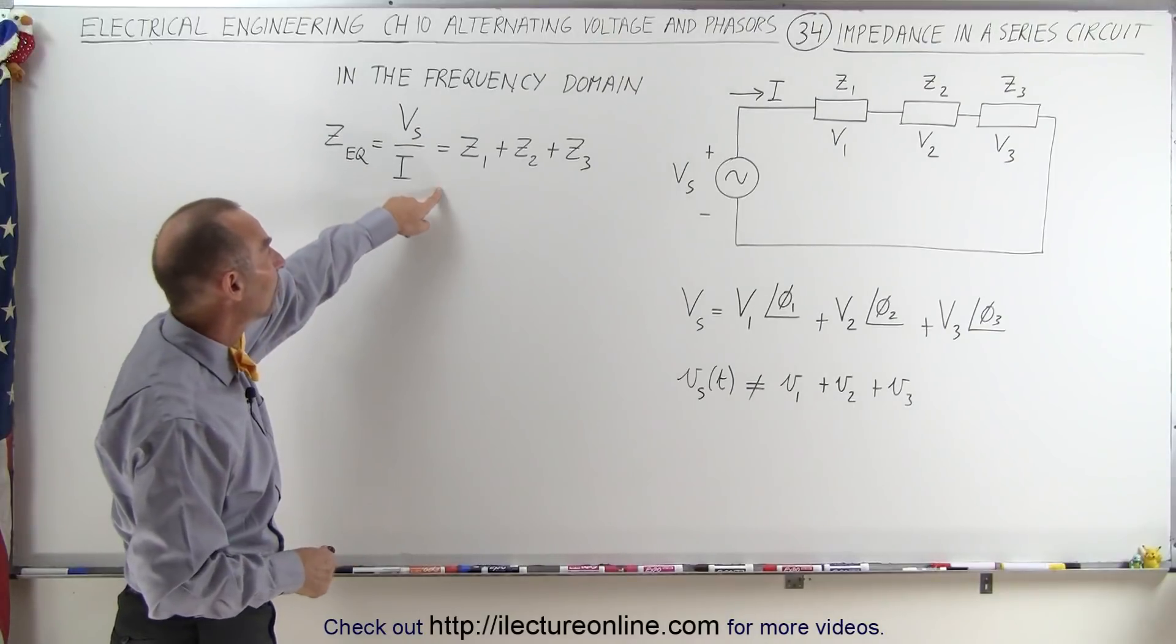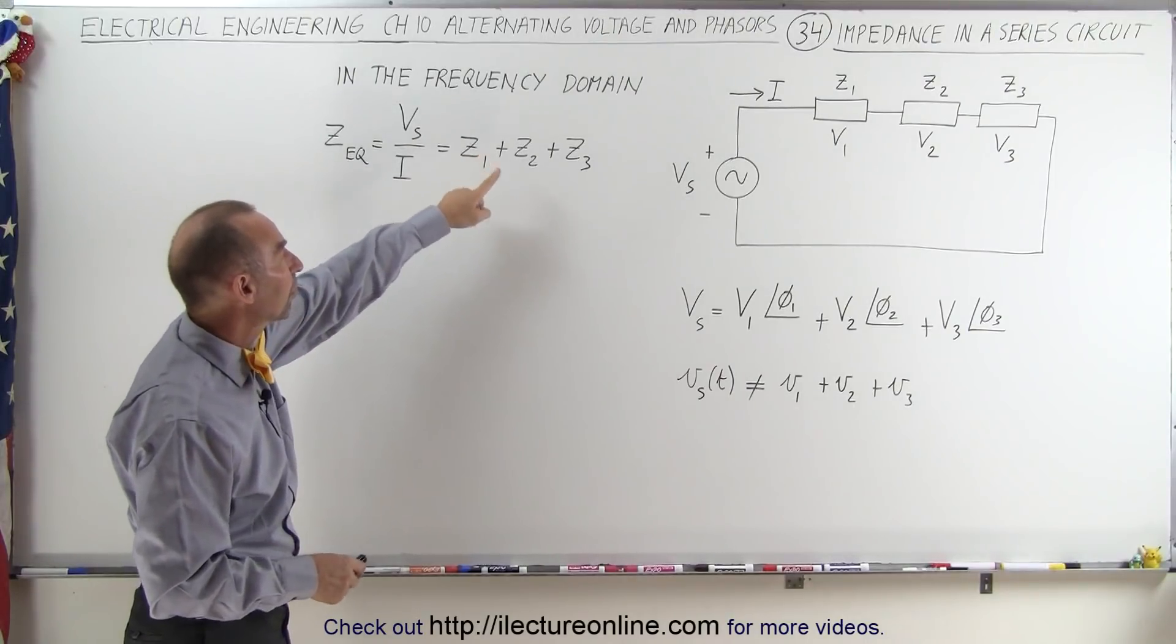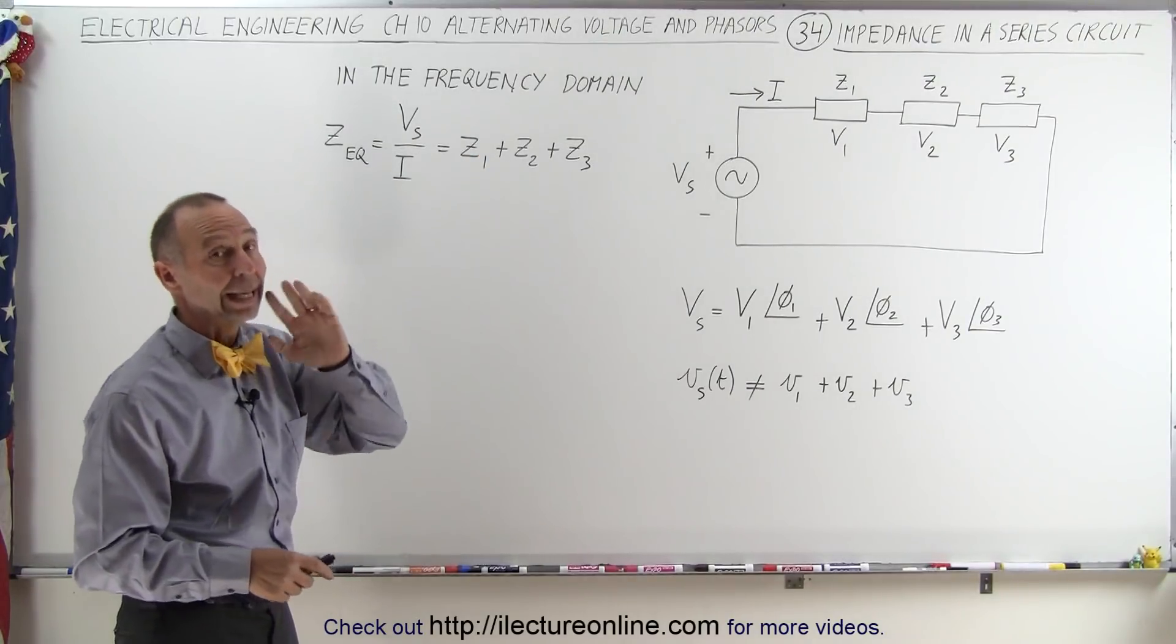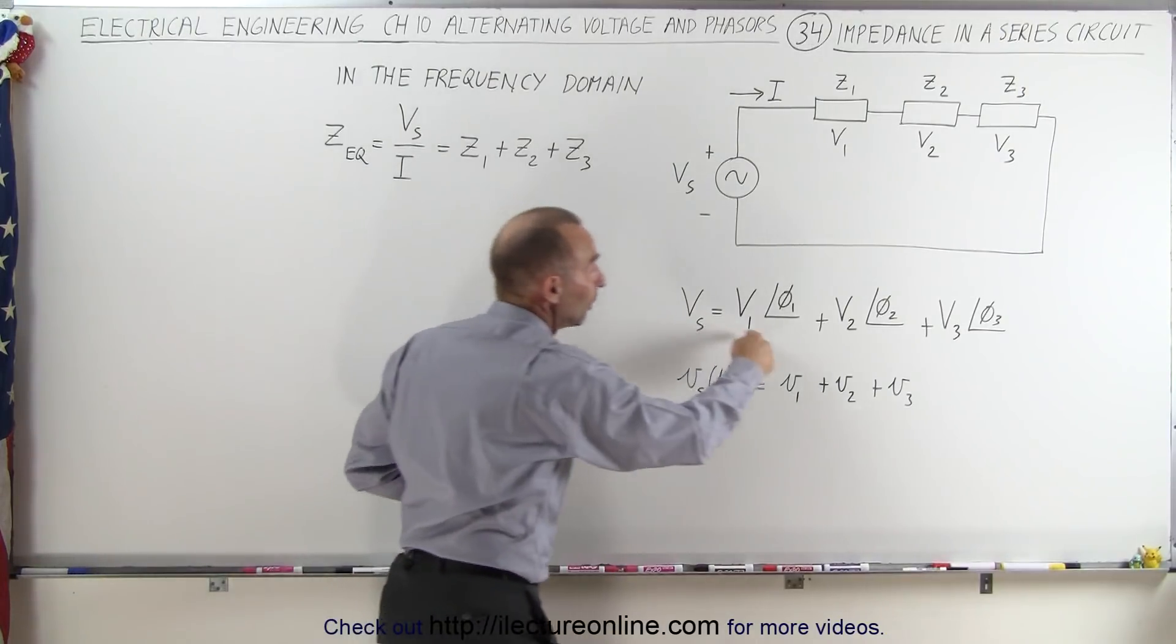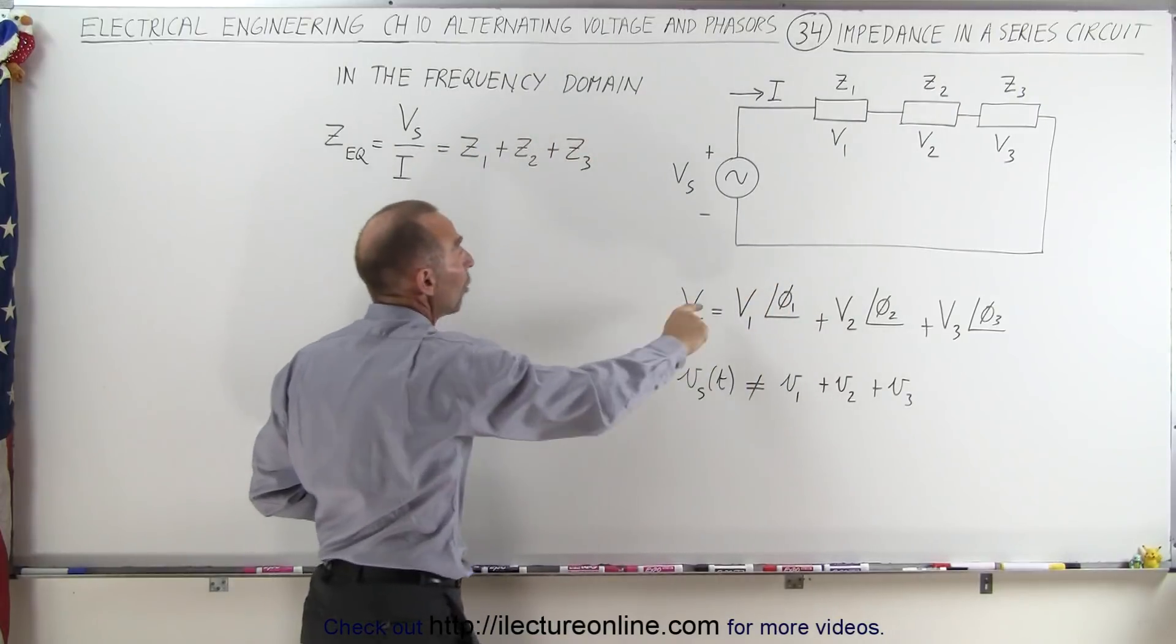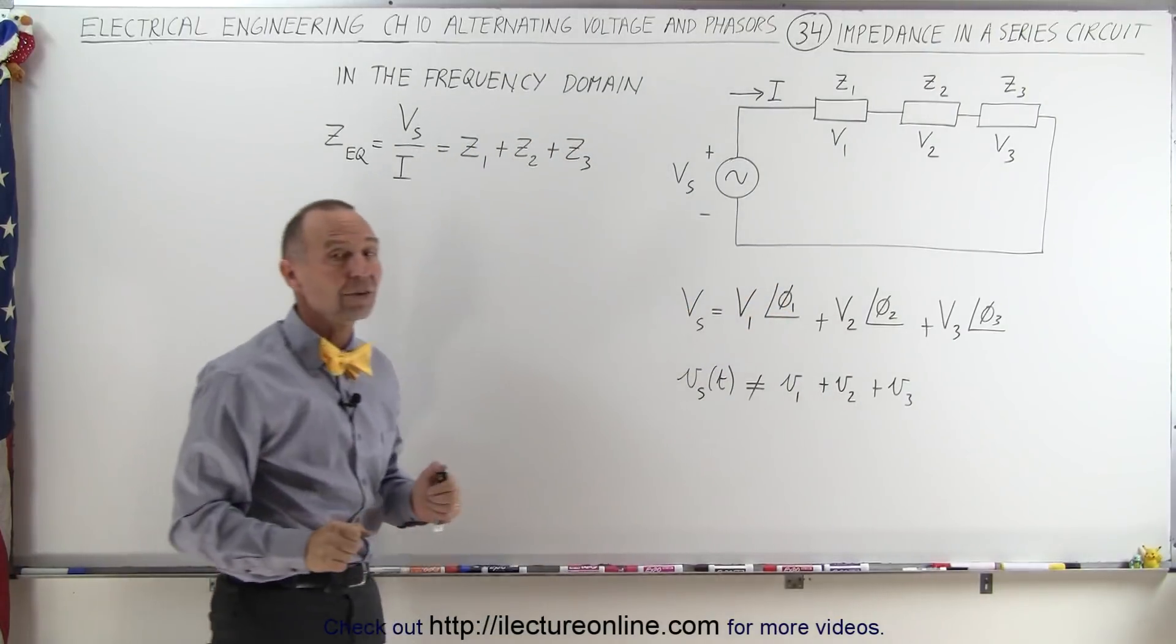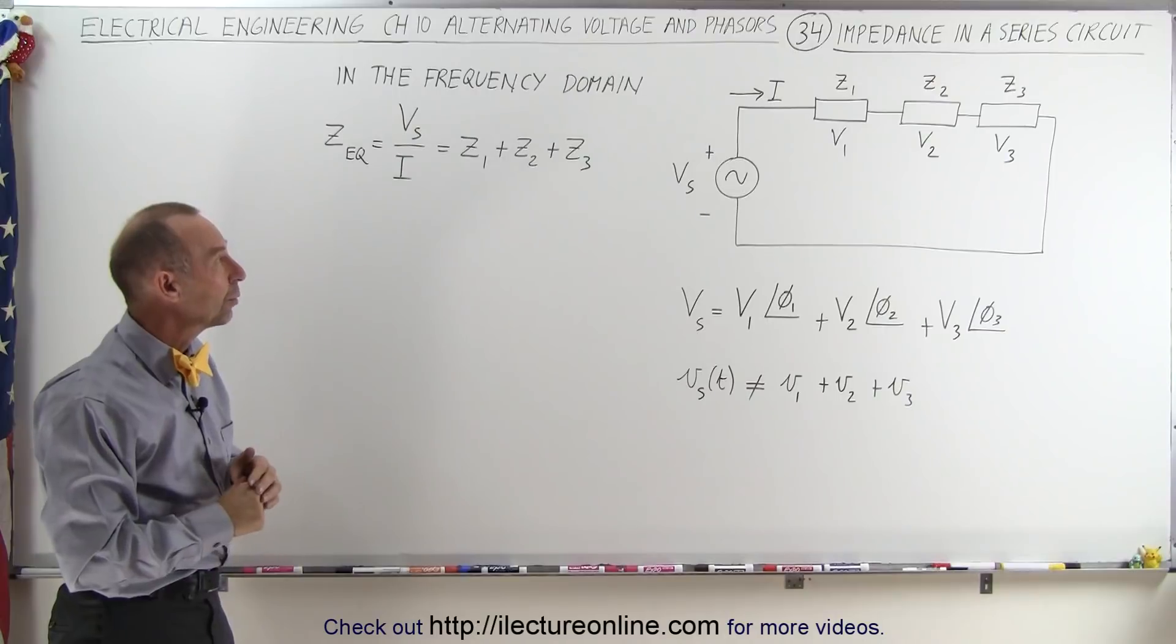But if we're going to add impedances, we can simply add impedance 1 plus impedance 2 plus impedance 3. Again, notice that the impedances have both the amplitude and phase difference, so in essence, when we add impedances, we do have to take into account the phase differences as well with impedances.